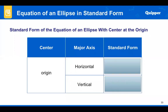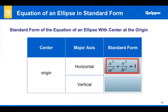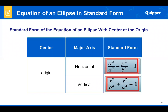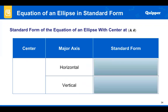The standard form of the equation of an ellipse with center at the origin and a horizontal major axis is: x squared over a squared plus y squared over b squared equals 1. And if the major axis is vertical, the standard form is x squared over b squared plus y squared over a squared equals 1.